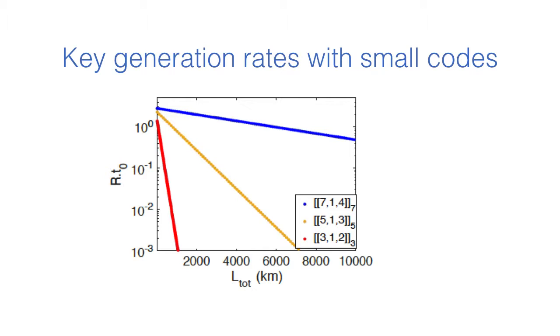Here we show the key generation rates that are attainable with small quantum polynomial codes, namely the 7-qudit, the 5-qudit and the 3-qudit codes with 1 kilometer repeater spacing in the absence of operation errors. We see that it's possible to communicate until 10,000 kilometers with the 7-qudit code.